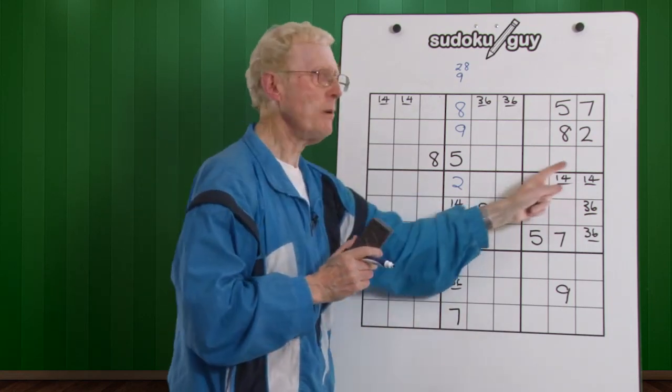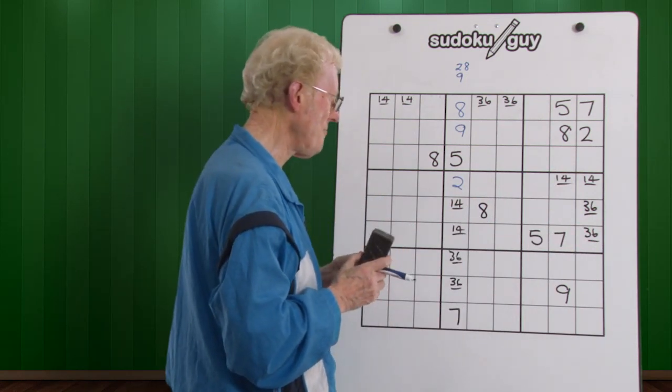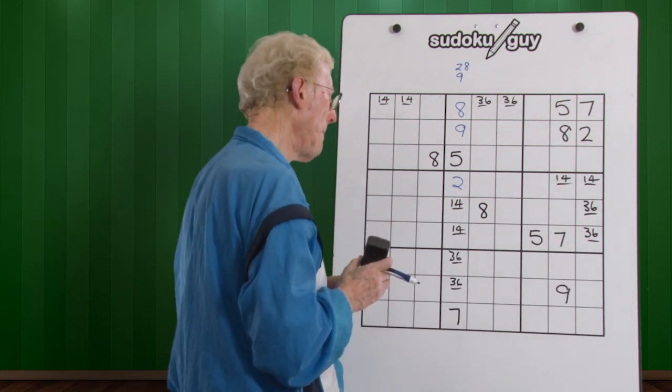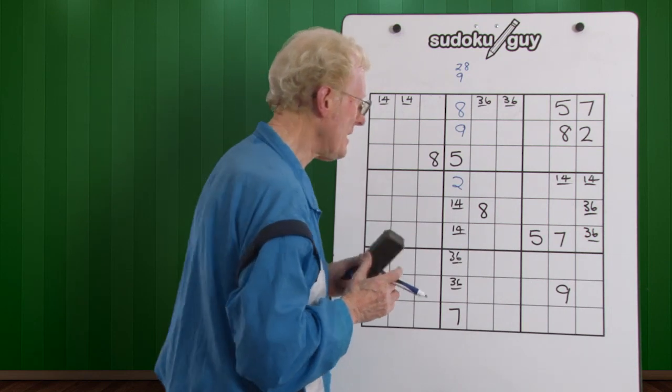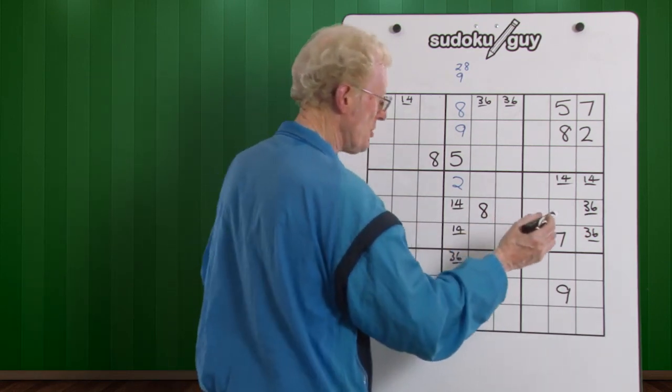Now, let's look at the block. Over there in the block, we have something that's, again, now I use this little symbol. Watch how I do it.